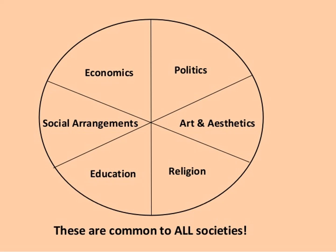Some of the cultural universals we see include economics, some form of politics or power, art and aesthetics, religion, education, and social arrangements like marriage and death ceremonies. All of these elements exist in every single culture, which is why we call them cultural universals.